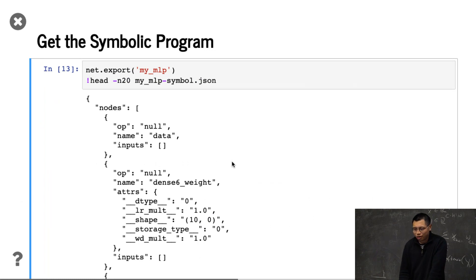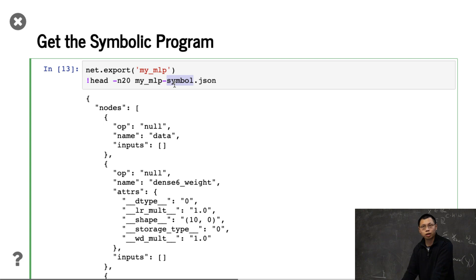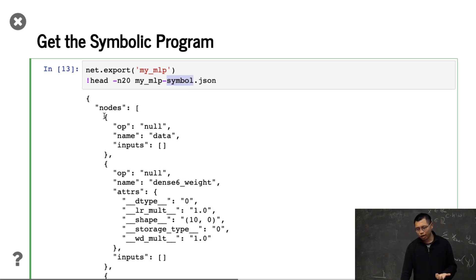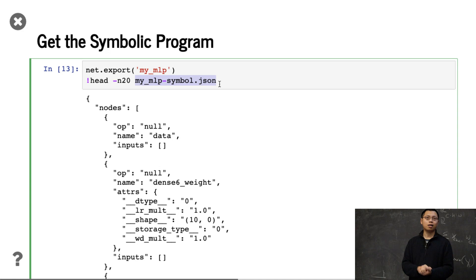Once you hybridize, you can export the network definition into an intermediate representation. When you do that, it saves a file named with your workload plus '-symbol' as a JSON file with a symbolic representation. We print the first 20 lines of the code — you can see a bunch of nodes, which is the computation graph defining the network. This JSON file is independent of Python.